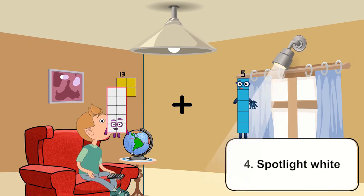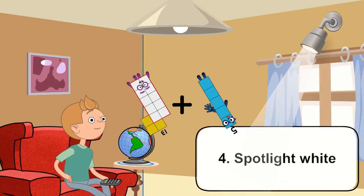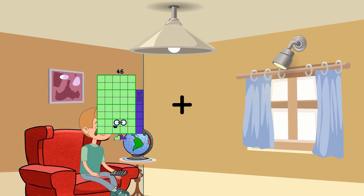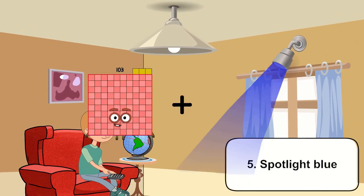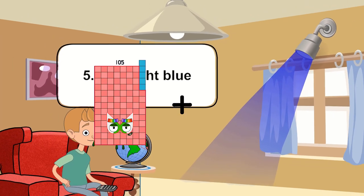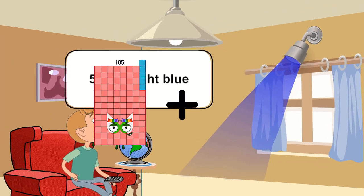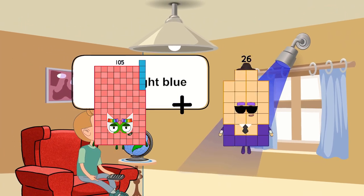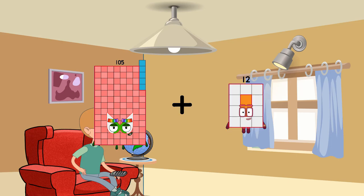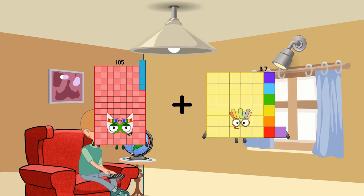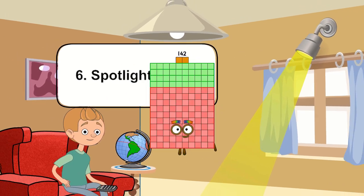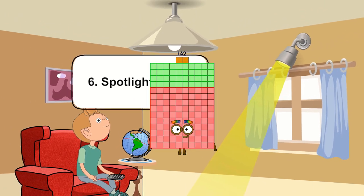5 plus 5 equals 18. 15 plus 37 equals 142.